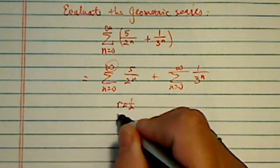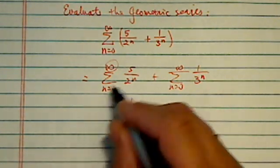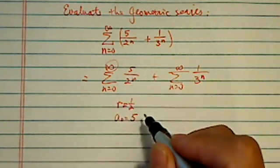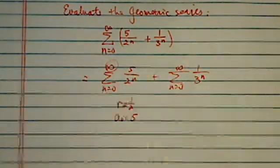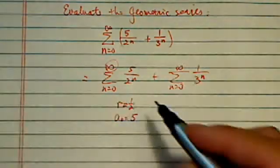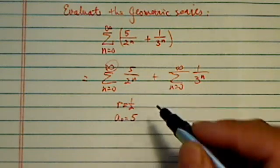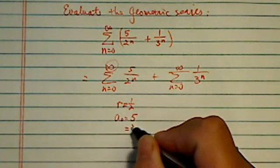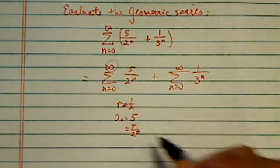And our a₀, the very first term, is 5, because it's 5 over 2 to the 0, which is 2 to the 0 is 1. So basically, it's 5 over 2 to the 0, which is equal to 5.